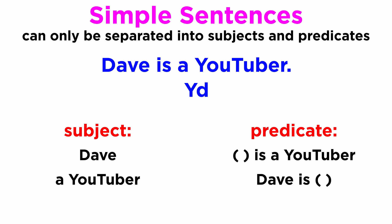But we can also consider YouTuber as a subject, and Dave is () as the predicate, if we'd like to shift the focus of our analysis. Finally, we can take both Dave and YouTuber as subjects, and () is () as a predicate.